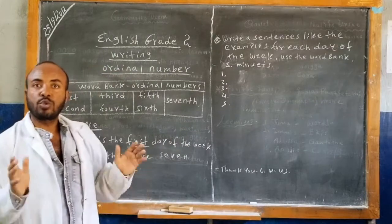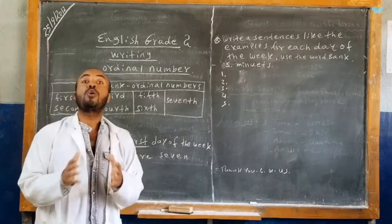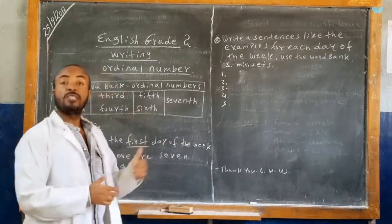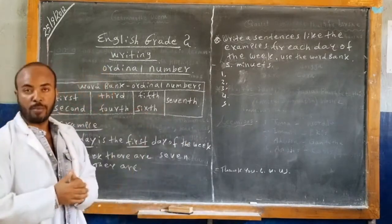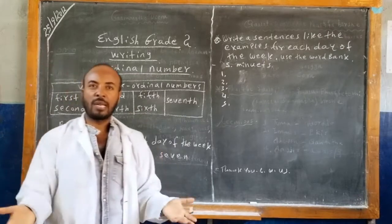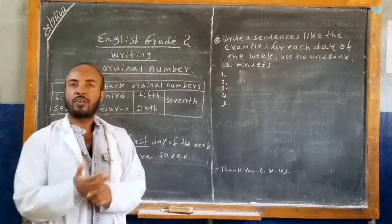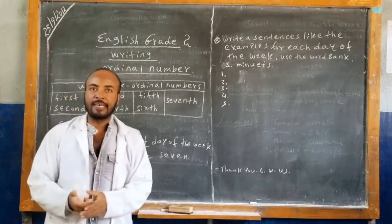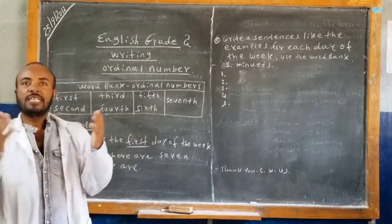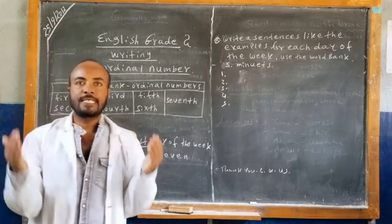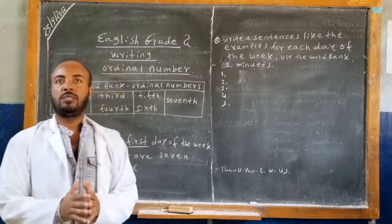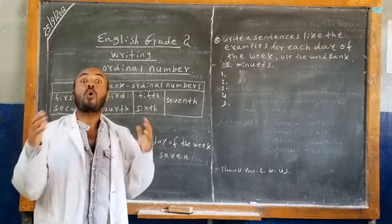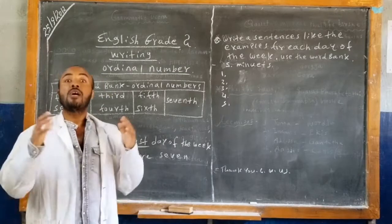But today we are going to learn the ordinal numbers. The ordinal numbers: first, second, third, fourth, fifth, sixth, seventh — and others. They are the ordinal numbers.